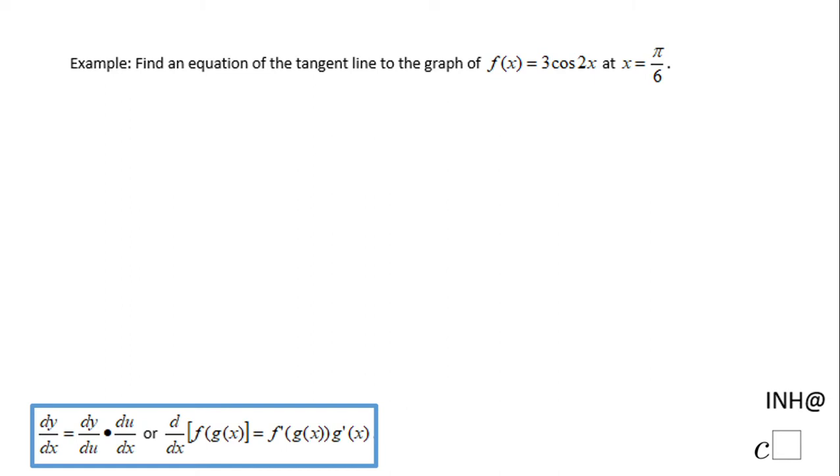Welcome or welcome back to I Need Help at C Squared. In this example, we need to find an equation of the tangent line to the graph of f(x) = 3cos(2x) at x = π/6. For finding the equation of the tangent line, we need to find the slope of the tangent line.